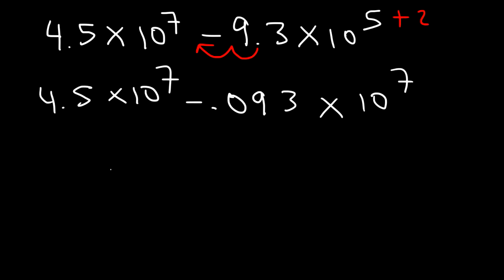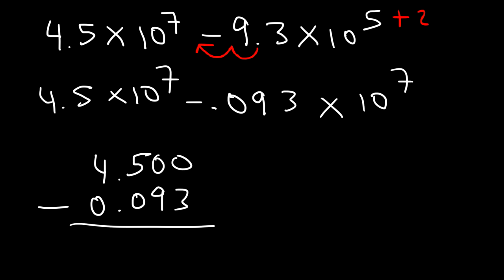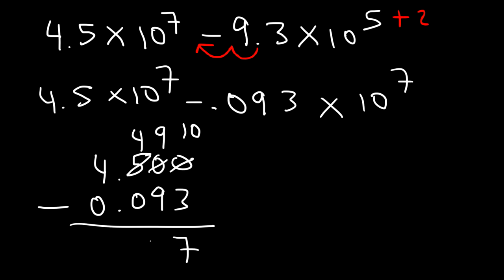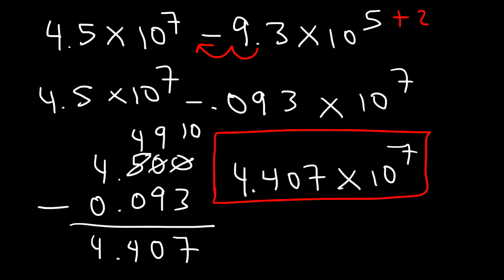Now subtract: 4.5 minus 0.093. Adding zeros for alignment: we can't subtract 0 by 3, so we borrow — borrowing from 50 makes it 49, so we have 4 and 9. Then 10 minus 3 is 7, 9 minus 9 is 0, 4 minus 0 is 4, and the leading digit is 4, giving 4.407 times 10 to the 7. Now you know how to add and subtract numbers using scientific notation.